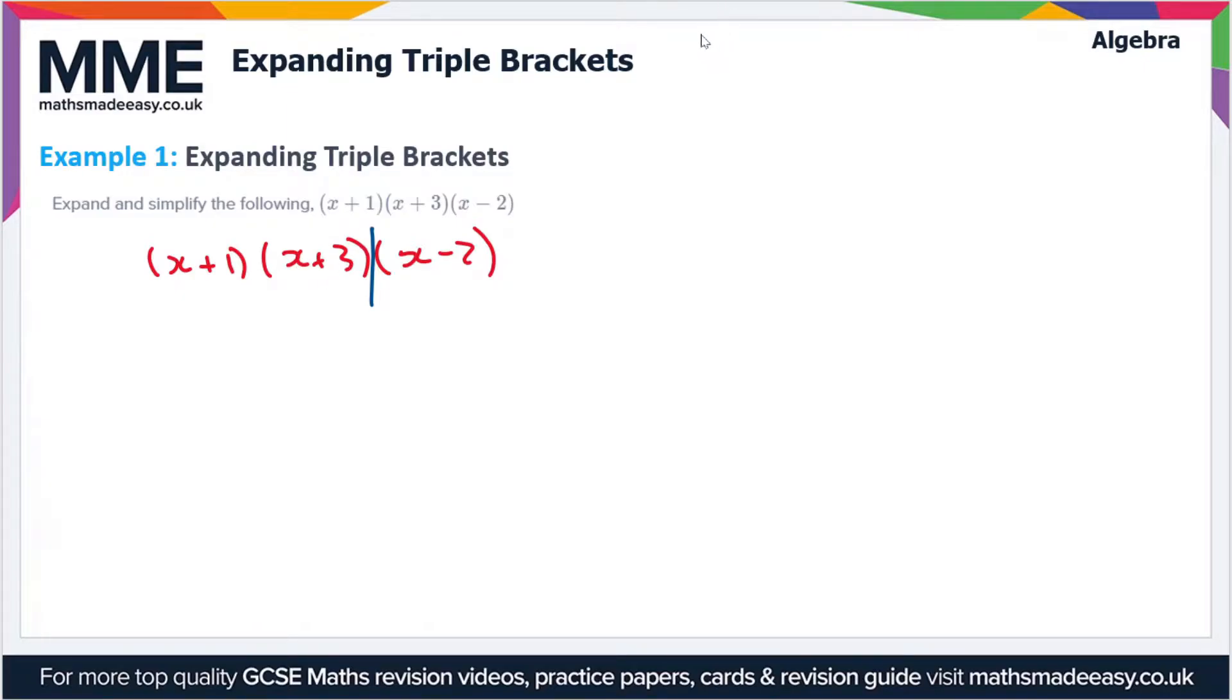We're going to use the FOIL method here, which is First, Outside, Inner, and Last. Essentially this is going to give us x times x as the first, that gives us x², then we have outside which is x times 3, so that gives us plus 3x, then the inner terms so that's 1 times x which gives us plus x.